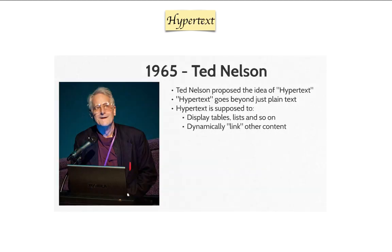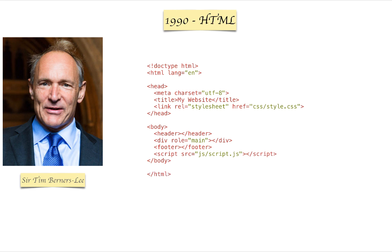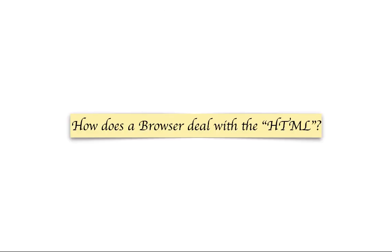How do you specify things like input fields, buttons, and links that are not in plain English? This question was actually around in 1965, when Ted Nelson came up with the idea called hypertext — 'hyper' meaning 'beyond' — which allows you to represent tables, lists, links, and so on. Not until 1990 did Sir Tim Berners-Lee create HTML, hypertext markup language, based on a language called SGML, which showed how to represent all these things.